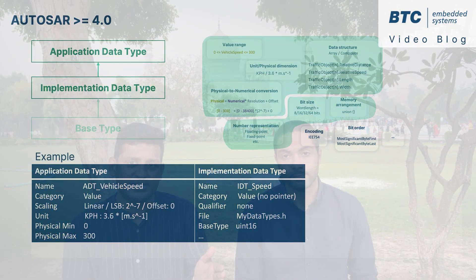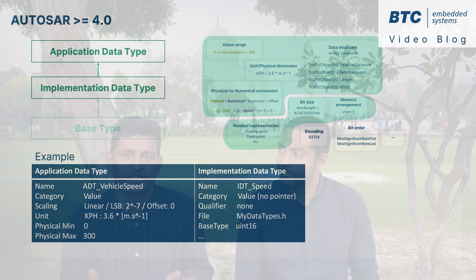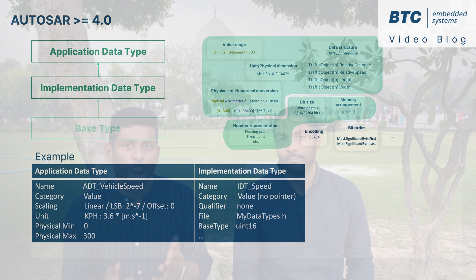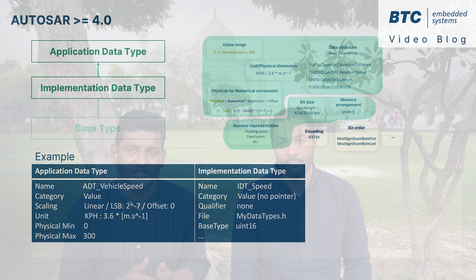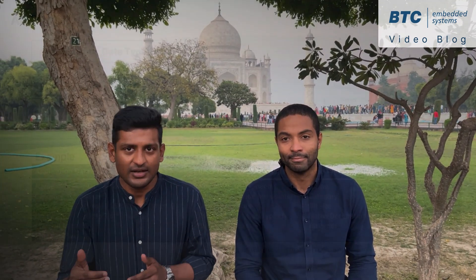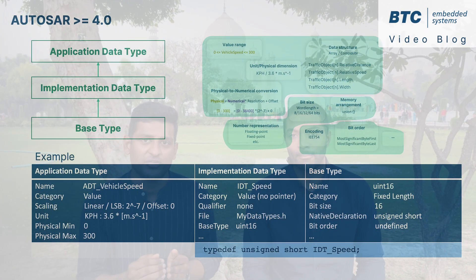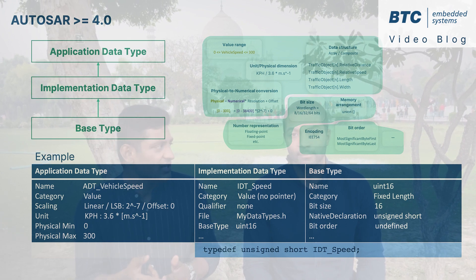We have the implementation data type, which basically defines how to convert the data description into a typedef in the code. It leaves the choice for things like bit size, integer or float representation, memory arrangement, pointer usage, etc., depending upon the actual implementation constraints. Therefore, it releases the system engineer from too much anticipation. And then, at the bottom, we have the base type. This is the closest abstraction to the platform, which can specify the bit definition down to things like endianness and alignment.